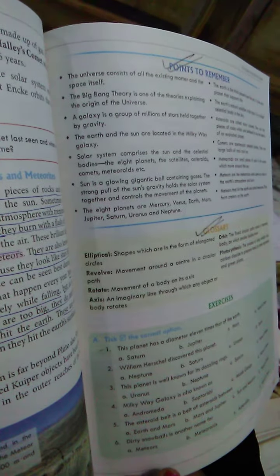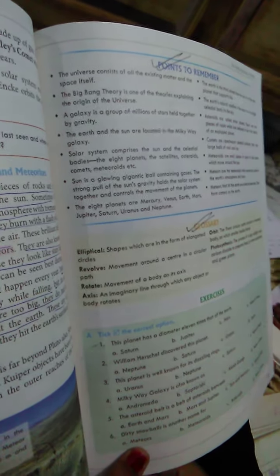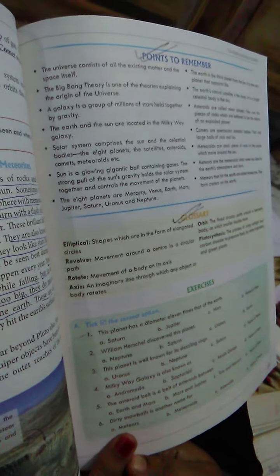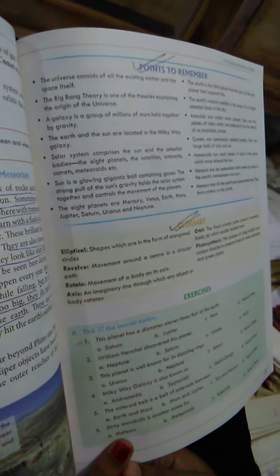Sun is a glowing gigantic ball containing gases. The strong pull of the Sun's gravity holds the solar system together and controls the movement of the planets.